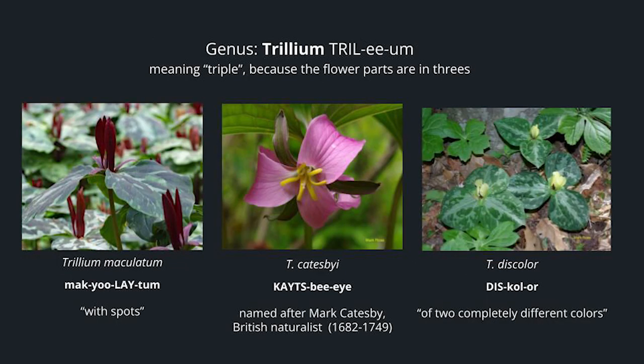Trilliums — the name meaning triple because the flower parts are in threes. A trillium with spots is Trillium maculatum. There's a trillium named after Mark Catesby — Trillium catesbyi. And we have a trillium with flowers of two completely different colors — Trillium discolor. These have yellow petals and purple stamens, and that's where it gets its name.